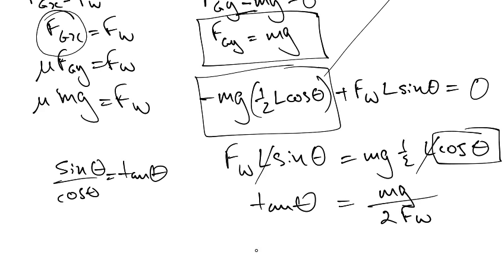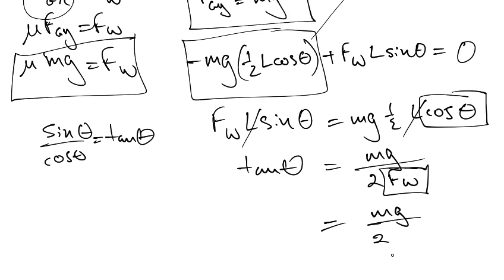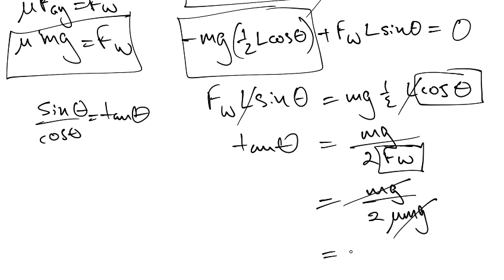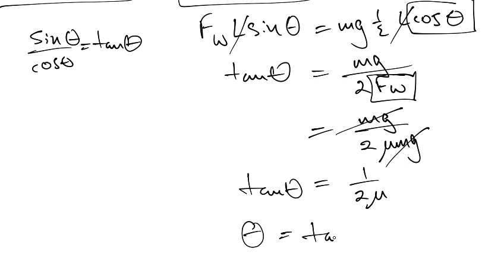However, what's interesting is the FW here. I know what it is from up there. So that's going to equal MG all over 2 times μMG. And if you'll notice, this MG cancels out with that MG. And I'm left with 1 over 2μ equals tan theta. Hence, theta is equal to the inverse tangent of 1 over 2μ. And that's the answer. Thanks for watching.